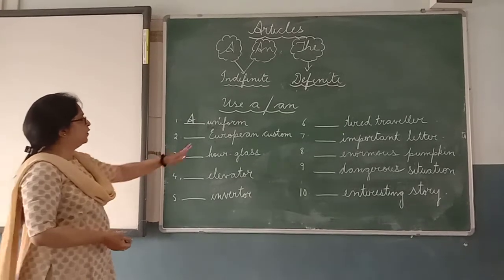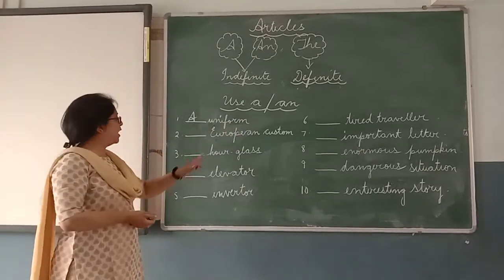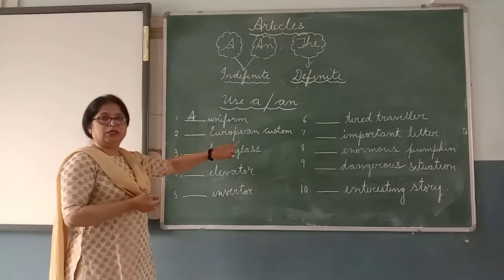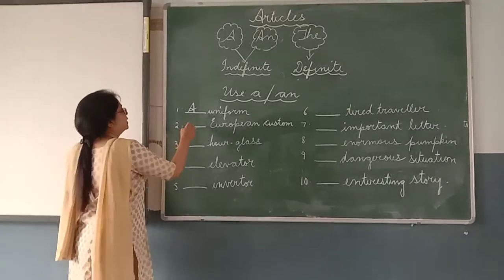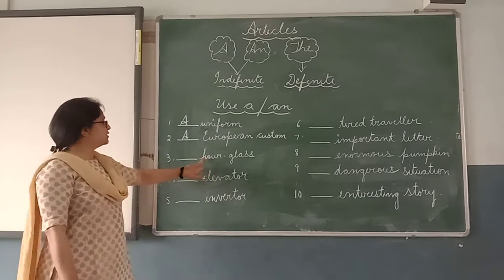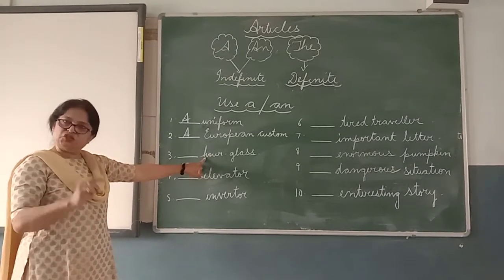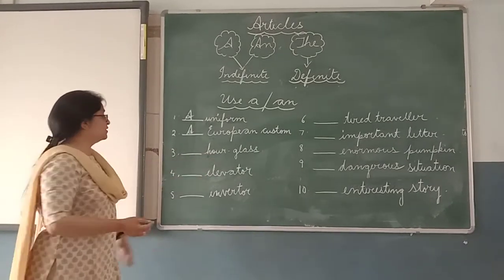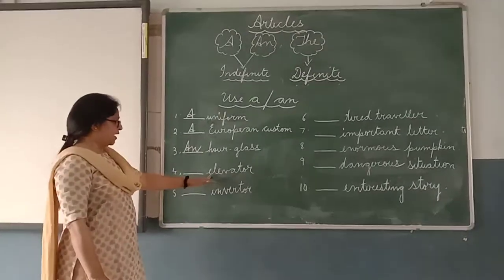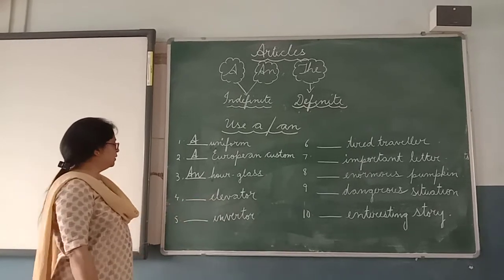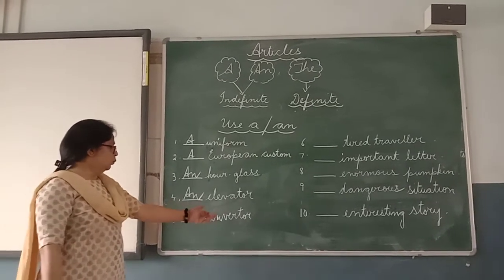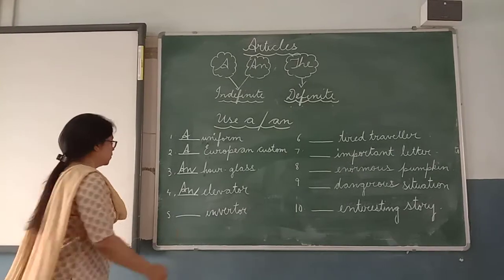Number two: 'a European custom' — again it has a vowel but a consonant sound, so 'a European custom'. Number three: 'our class' — here 'H' is silent and it has a vowel sound, so 'an hour's class'. Number four: 'an elevator' — it has a vowel sound as well as starts with a vowel. Number five: 'an inverter' — it starts with a vowel sound, so 'an inverter'.